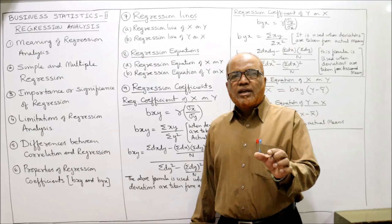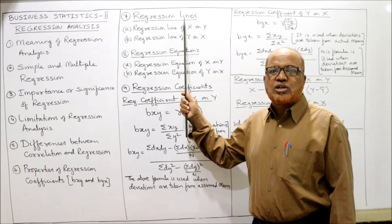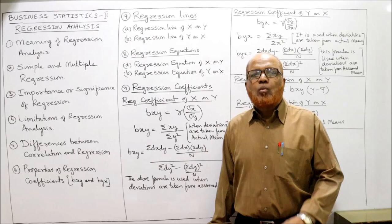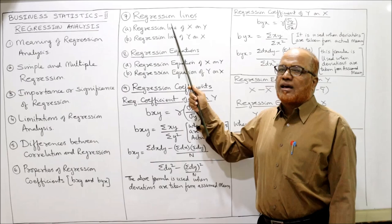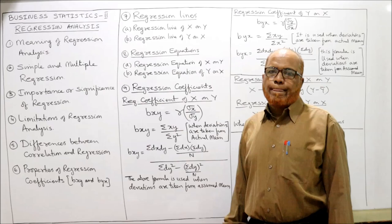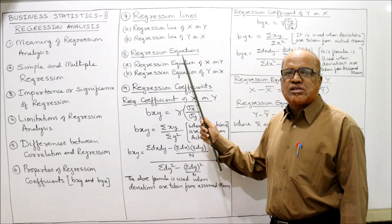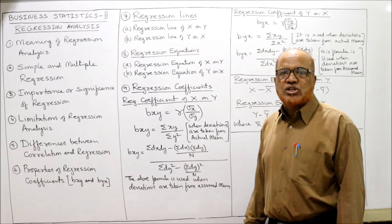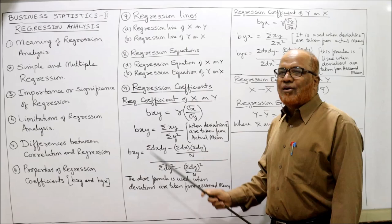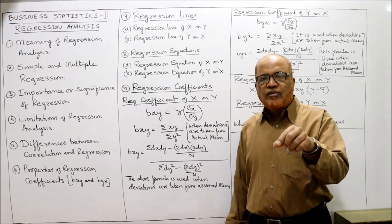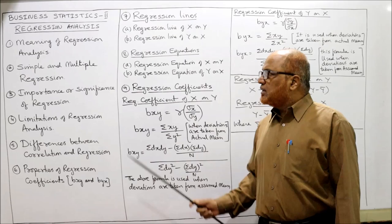Regression equations are the algebraic presentation of regression lines. Regression lines are graphical, whereas regression equations are algebraic. Both serve the same purpose. Just as we have two regression lines, we have two regression equations: one for x on y and one for y on x. The regression coefficient is the number of units change in one variable due to a unit change in the other variable, and we must calculate the regression coefficient before making the regression equation.